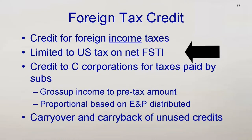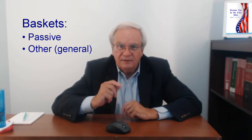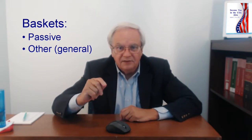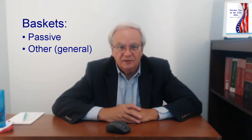The foreign tax credit is limited to the portion of U.S. tax on foreign source taxable income. A separate limit applies for each of two separate baskets or categories of income: general and passive. Passive income is interest, dividends, rents, and royalties, and gains on property that gives rise to such income. There are some exceptions to this. Everything else is general basket.